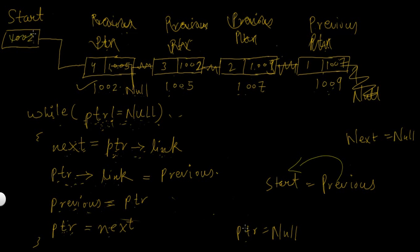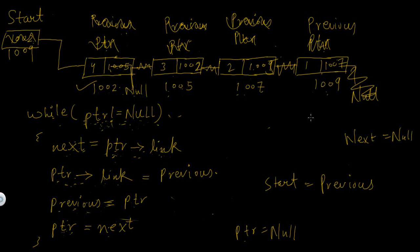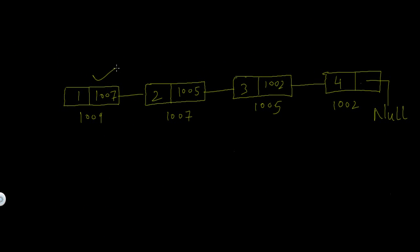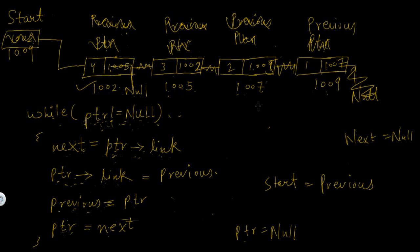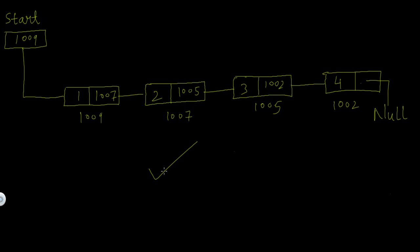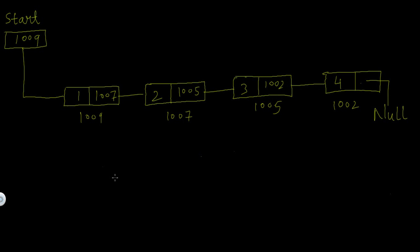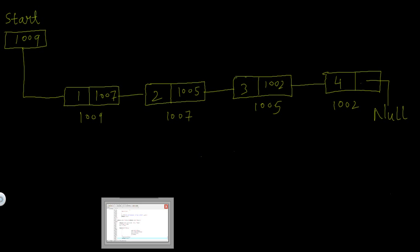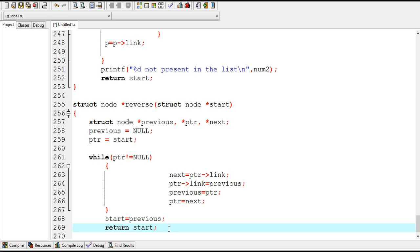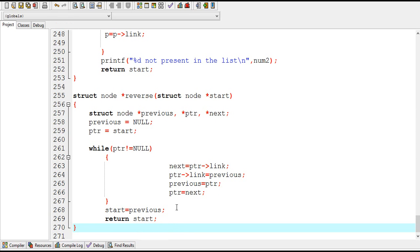So start will now store 1009, the address of the last node which has become the first node in the reversed list. Start should now store the address of this node and the whole linked list has been reversed. In the end we return the value of start because the value of start has changed — the last node has become the first node — so the new value of start should be updated in the main function. This is the end of this function.